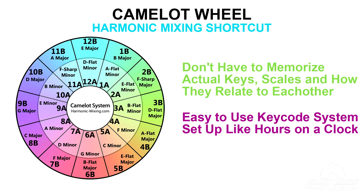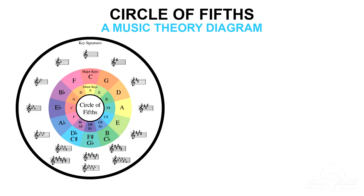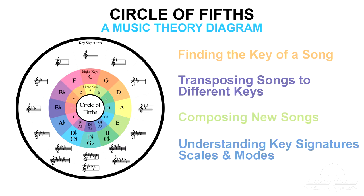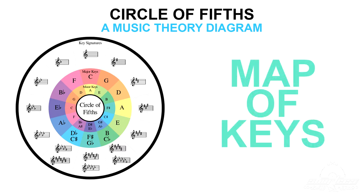The Camelot wheel assigns each key a key code number from 1 to 12, like hours around the clock. The Camelot wheel is quite literally based on what's known in traditional music theory as the circle of fifths. The circle of fifths is a diagram used for finding the key of a song, transposing songs to different keys, composing new songs, and understanding key signatures, scales, and modes. DJs can use this tool primarily as a map of keys, so that's the portion of music theory we're going to focus on in this lesson.